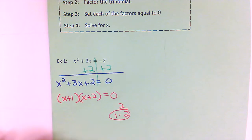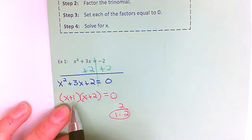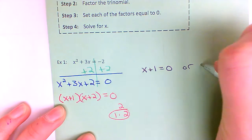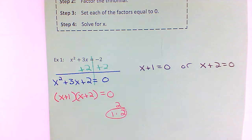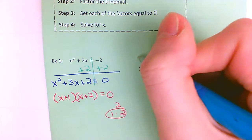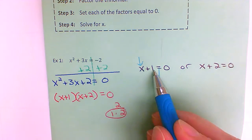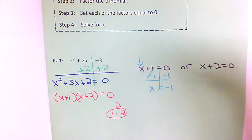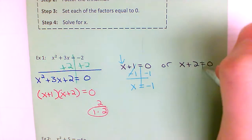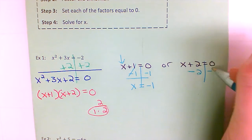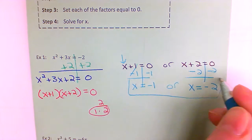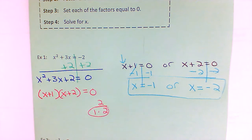Once you have that thing factored, go over to the side and take each one of your sets of parentheses: x plus one equals zero, or x plus two equals zero. All you need to do is solve each equation for x. For the first one, the opposite of a plus one is a minus one, so that gives me x is equal to negative one. On the other side, the opposite of a plus two is to subtract it, which means x is equal to negative two. So those are my two answers.